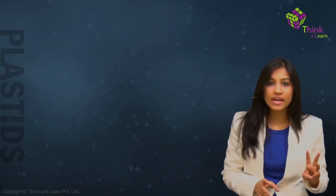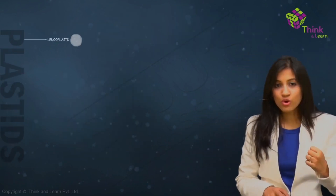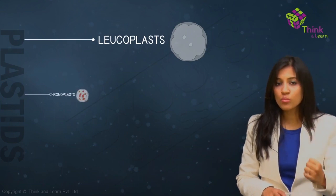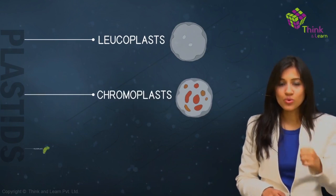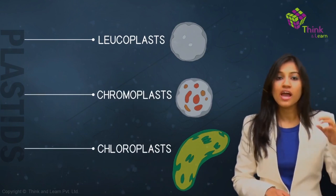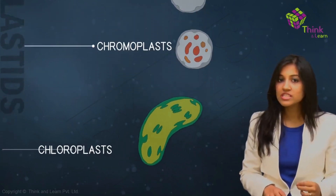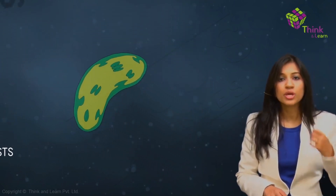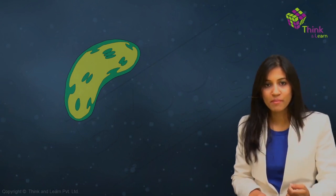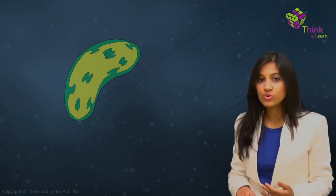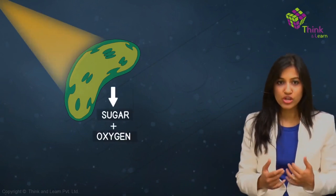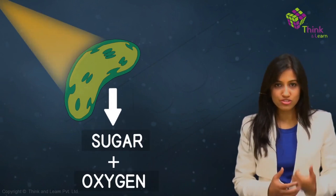Plastids are of three types: leukoplasts, chromoplasts, and chloroplasts. Chloroplasts are the most important of them, and what they do is convert light into sugar and oxygen.